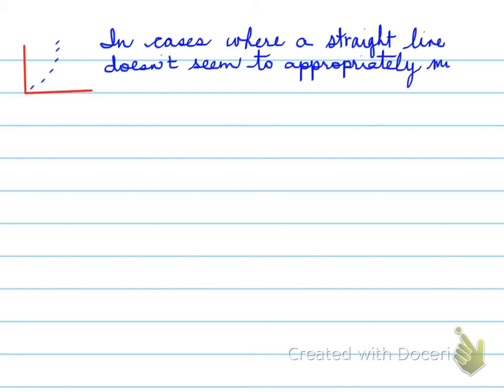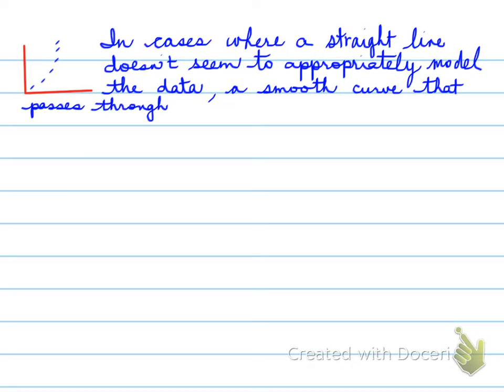Here is a curve. How do we know what that will represent? Well, if I was to draw a line anywhere around here, we definitely won't get a straight line. We would be forced to draw a curve. So in cases where a straight line doesn't seem to appropriately model the data, a smooth curve that passes through as many points as possible is best. So an example is like that right there.